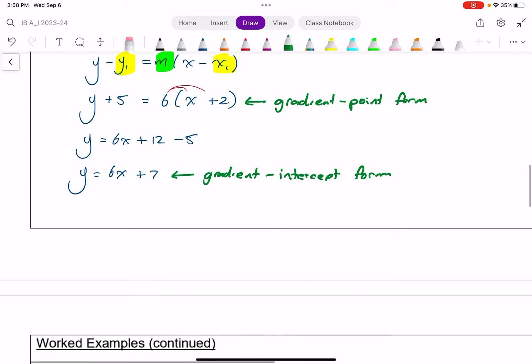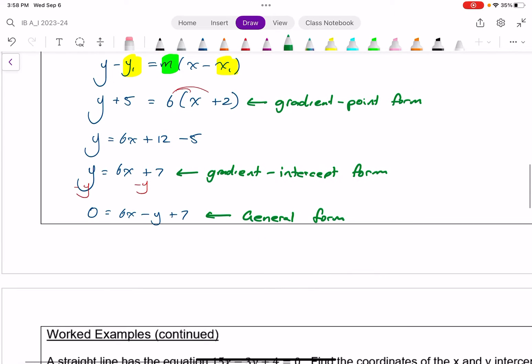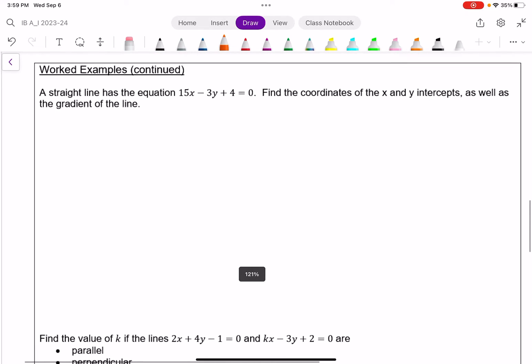Lastly, we want general form in which we have all our variables and all our terms on one side. We also want to have our x term being positive, and we want everything to be an integer. And we want the x coefficient to remain positive. So in this case, to make it in general form, all I got to do is subtract y from both sides. We have 0 equals 6x minus y plus 7. All right, and so before I move on, if I were to graph any of these equations in Desmos, for example, they'd all make the exact same line. The most convenient one is probably this, because it's solved for y.